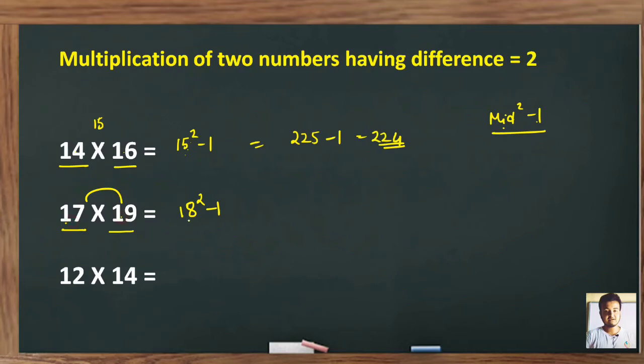17 into 19: 18 square equals 324 minus one, that means 323. Similarly here, 12 into 14, the middle number between 12 and 14 is 13. So the answer is 13 square minus one. 13 square is 169 minus one, that means 168. This is your shortcut.